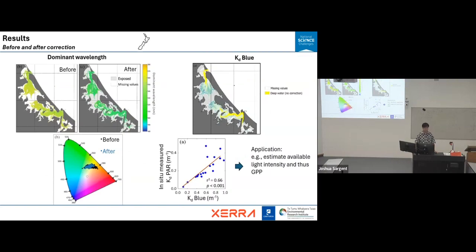Looking at results before and after we remove the seabed reflectance: on the left is before, and on the right is after. After removing the bottom reflectance, the color becomes greener. Plotting all values on the chromaticity chart, after removing the bottom reflectance the color shifts greener, especially ranging from 540 nanometers to about 575 nanometers — most scatters gather in the green range after the bottom reflectance correction.